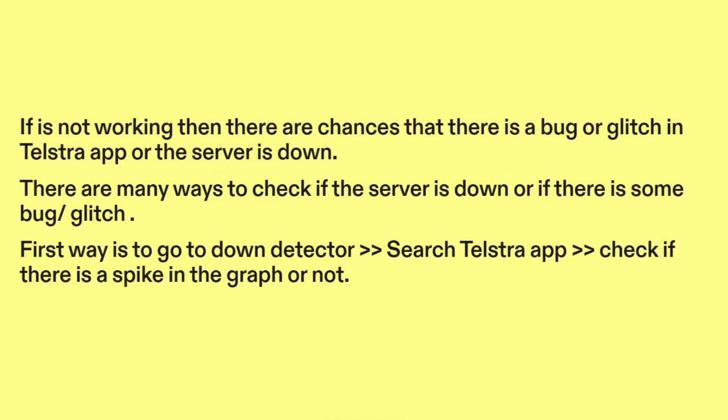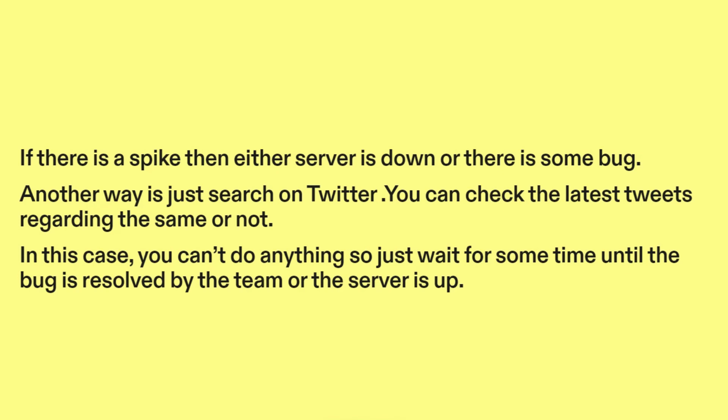If it's not working, then there are chances that there is a bug or glitch in the Telstra app, or the server is down. There are many ways to check this. First, go to Down Detector, search Telstra App, and check if there is a spike in the graph. If there is a spike, then either the server is down or there is some bug.